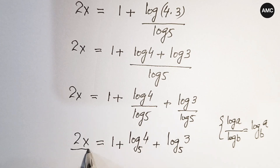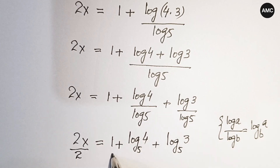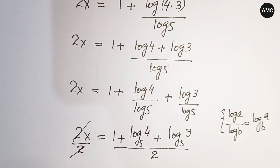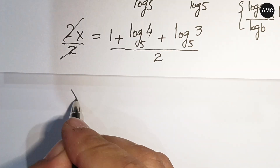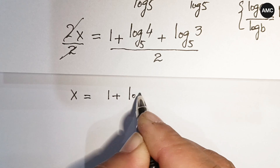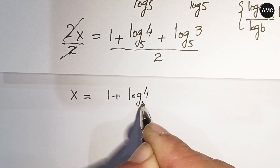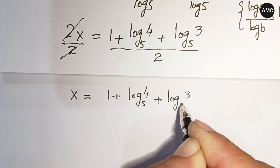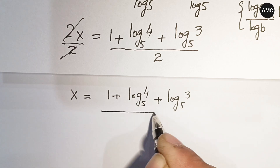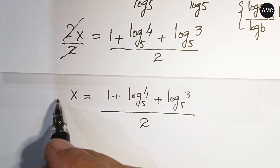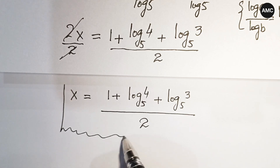Now if we divide both sides by 2, the 2 on the left cancels, and we get the value of x equals 1 plus log 4 to base 5 plus log 3 to base 5, all over 2. This is our final answer.